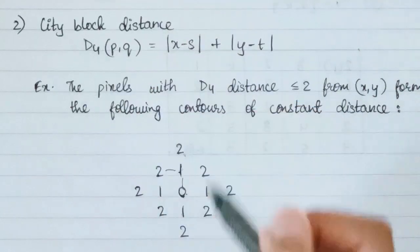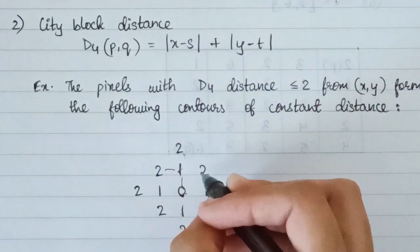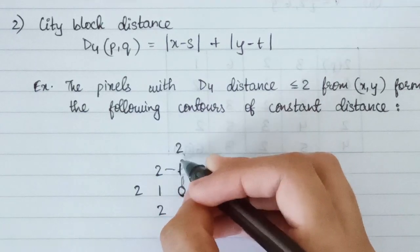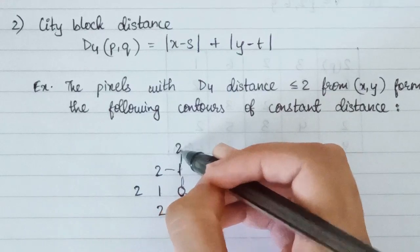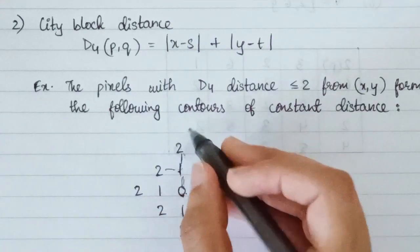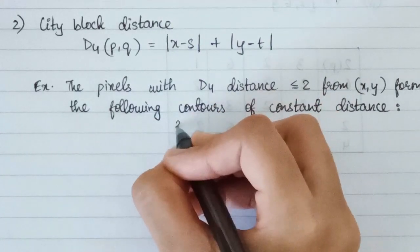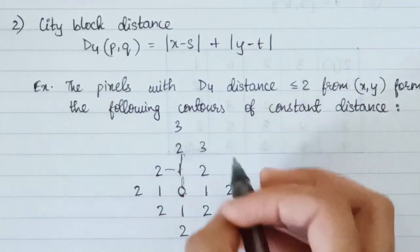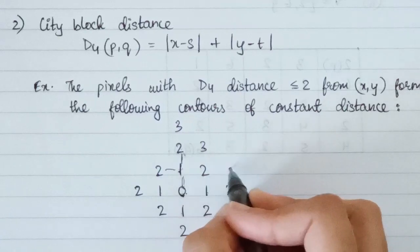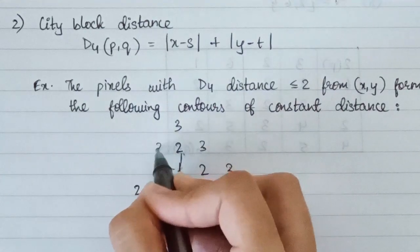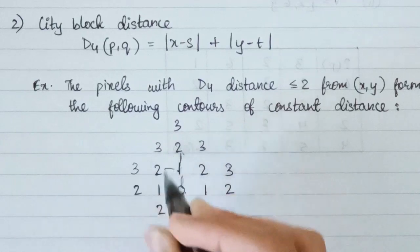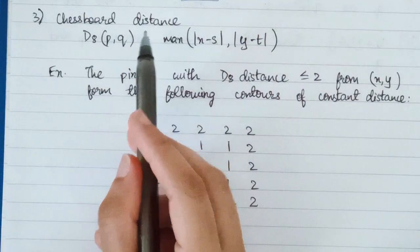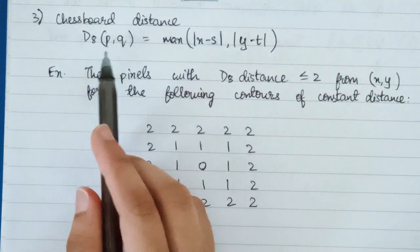Using D4, if we have to travel to a certain point it would be 1, 2 — so 2 is written there. Similarly to another point it would be 1, 2, 3 — so 3 is written. In this way the entire distance matrix can be found. The next type of distance is chessboard distance, with formula D8(p, q) = max(|x - s|, |y - t|).